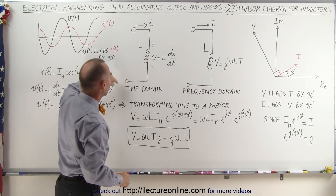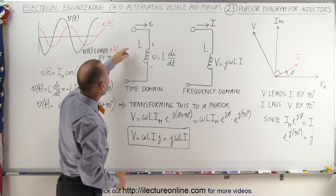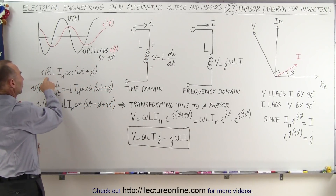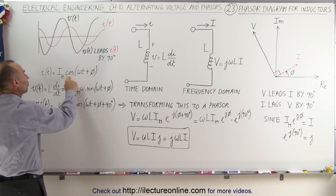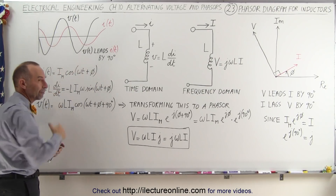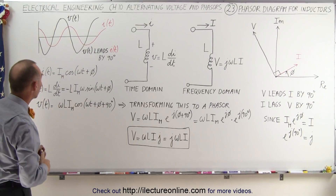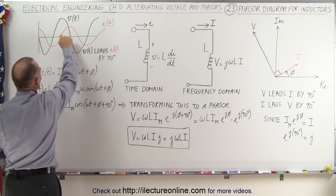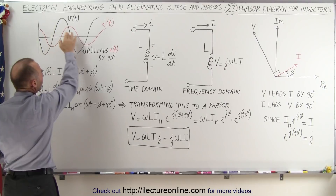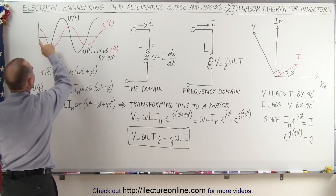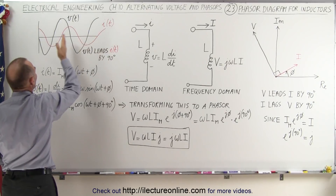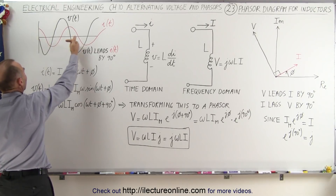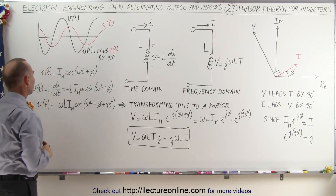Here we have a simple diagram for the inductor with a current flowing through it. The current is a function of time with a maximum value times the cosine of omega t plus phi — that's the general equation of a time-variant current. On the diagram, the red line represents the current, with the phase angle set to zero. We can see the phase difference for the voltage: the voltage leads the current by 90 degrees, which shifts the voltage diagram to the left relative to the vertical axis.